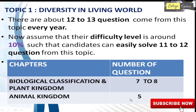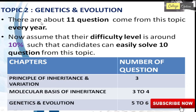Another topic is Genetics and Evolution, which has around 11 questions every year. The difficulty level is about 10%. There are three chapters in this topic: Principles of Inheritance and Variation with 3 questions, Molecular Basis of Inheritance with 3 to 4 questions, and Evolution with 5 to 6 questions.